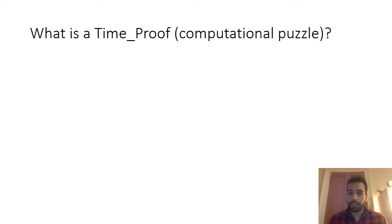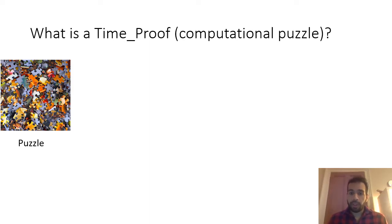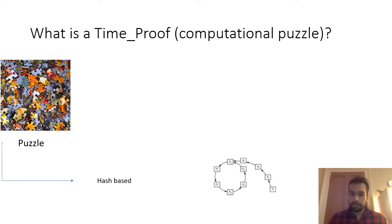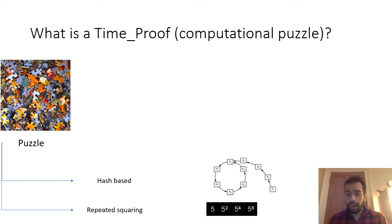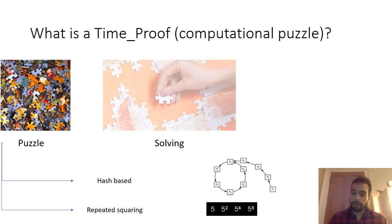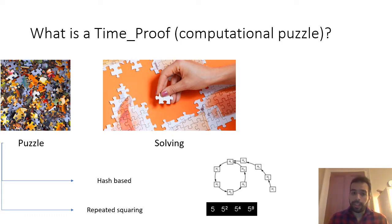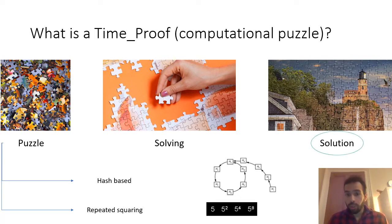I referred earlier to a time proof, but what is a time proof in the computational puzzle case? In computational puzzle time-lock encryption schemes we have a puzzle that needs to be solved in order for someone to retrieve the initial message. This puzzle can be solved via a hash function or via arithmetic, for example the repeated squaring problem. The party tries and solves the puzzle and obtains the solution. The solution is the time proof — the proof that some computation has been done — and by providing the solution to the decryption algorithm, any party can retrieve the initial message.